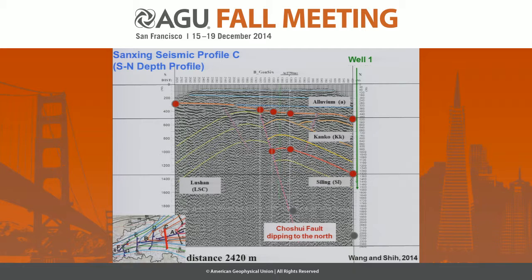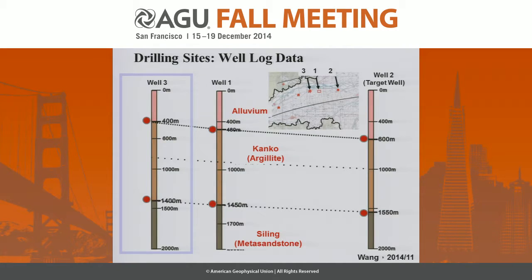We also have four profiles along the south-to-north direction. This is a typical seismic profile. We have surface-based features, and the fault dips to the north. We have the Slate Formation in the southern part. In addition, we have well-log data from well one and well two, which we will use to build the conceptual model. Well three is a future production well that might be drilled in the west of this region.